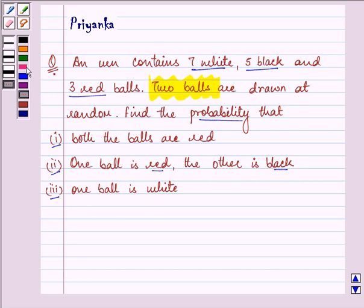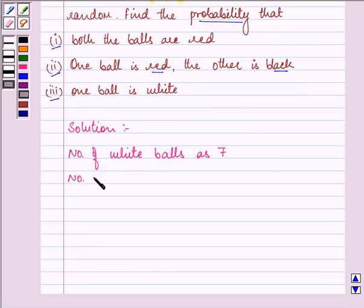Right, so let us proceed with our solution. Firstly, we are given number of white balls as 7. Then, we are given number of black balls as 5.